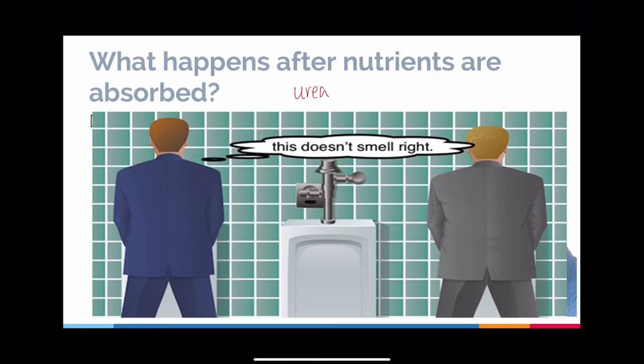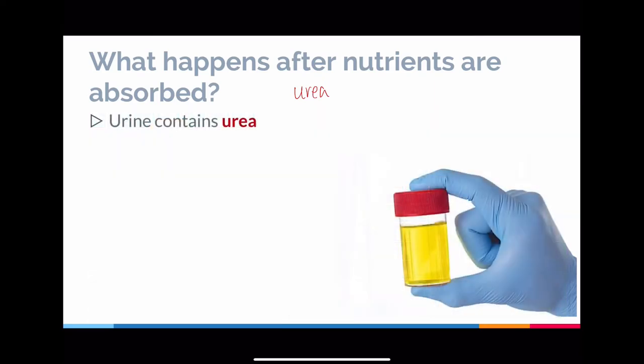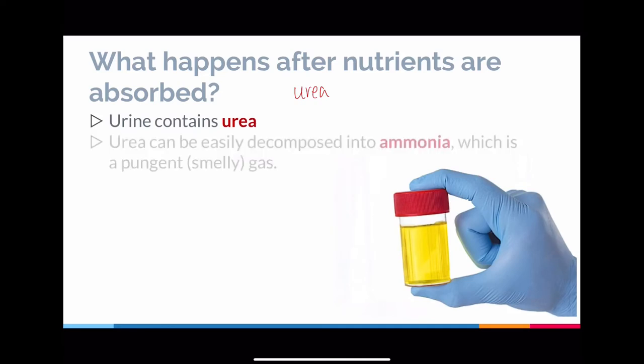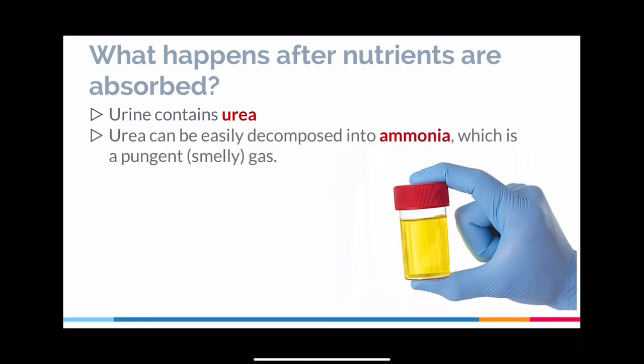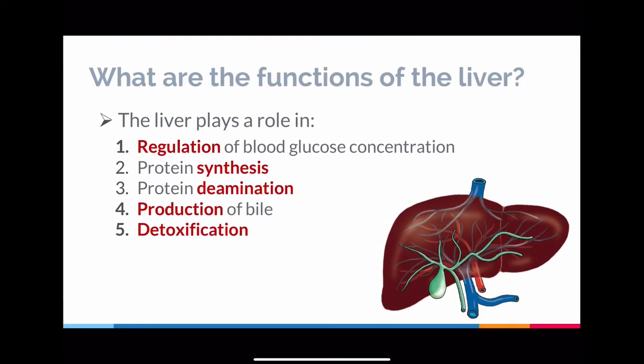Think of the liver as a checkpoint — like crossing into Malaysia, where there are processes to make sure only the correct things move through in the right amounts. The urea formed from amino acids through a process called de-amination is actually what produces the very strong smell when you urinate. Urea is one of the chemicals that converts into something with that distinctive pungent smell, and your urine contains urea itself.